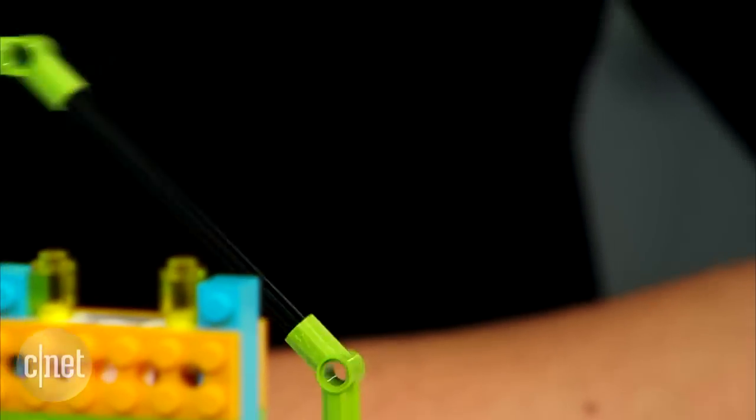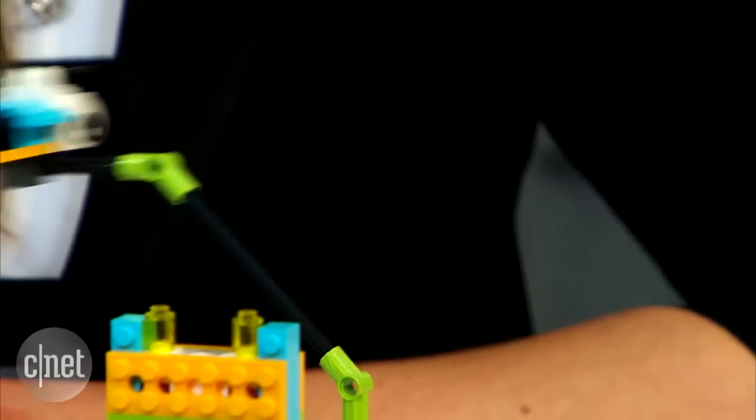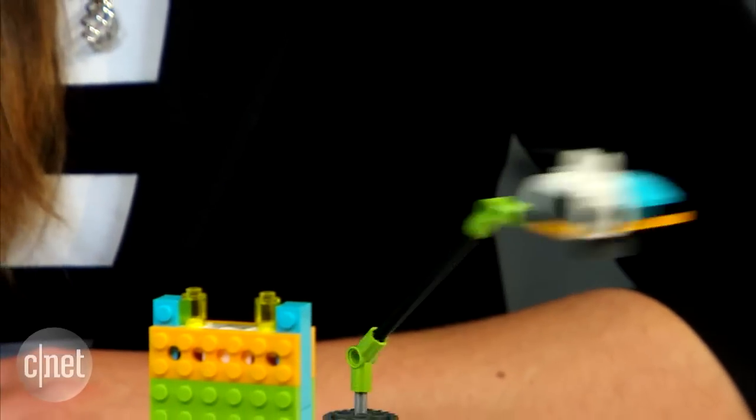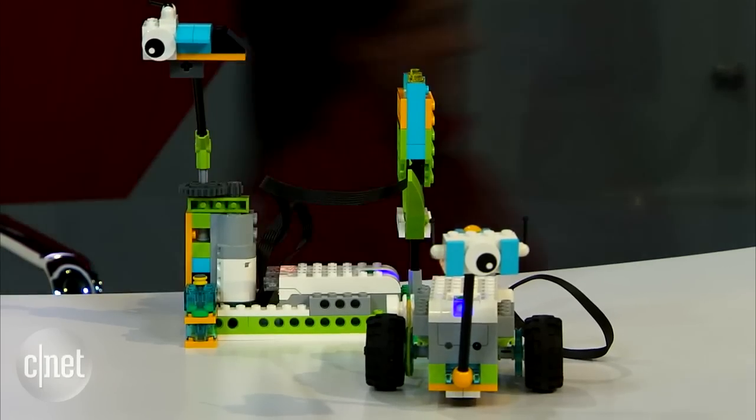You can actually see it progressing through each of the stages on the screen here. The WeDo set starts at $160 for the core set and the app is available on Android, iOS, Windows and Mac. For more information, check out CNET.com.